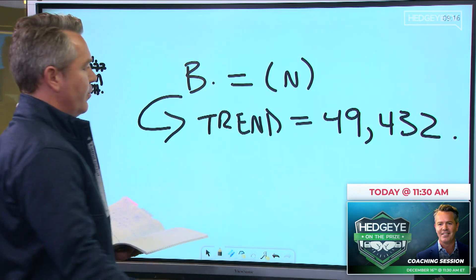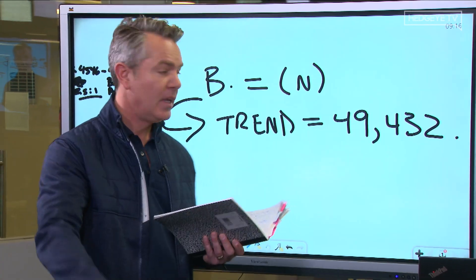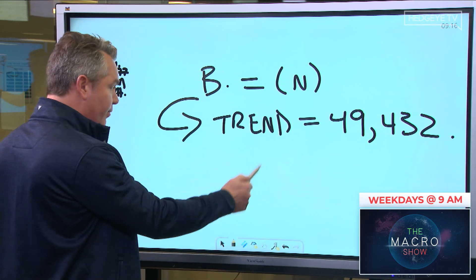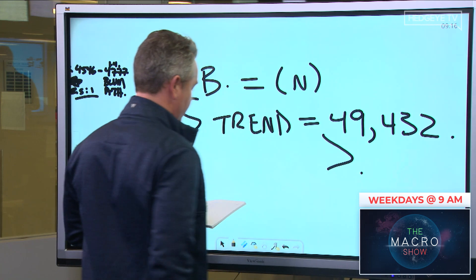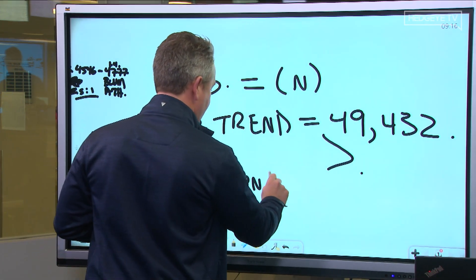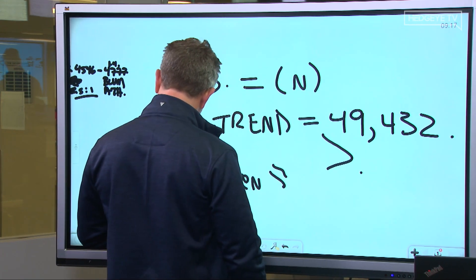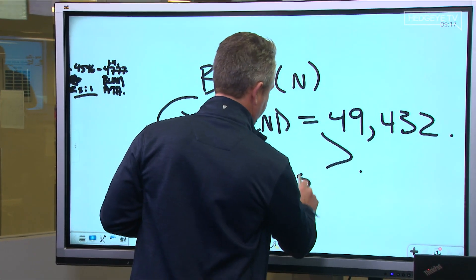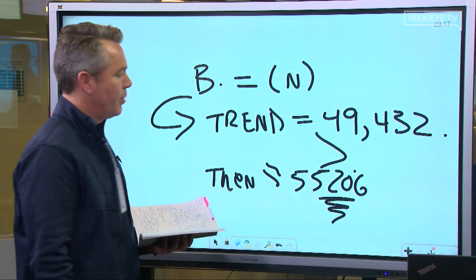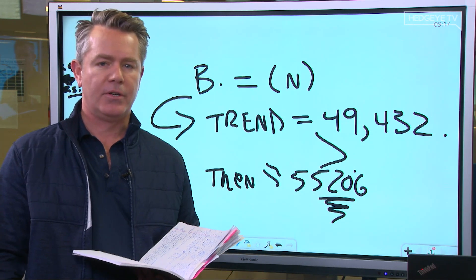For those of you that do math or science — an if/then model: if bitcoin is neutral today and it gets above this number, the top end of the risk range approximates 55,206. That's really exciting. Problem is, if it doesn't get above trend, it can go back towards 43,000, which is the low end of the range.